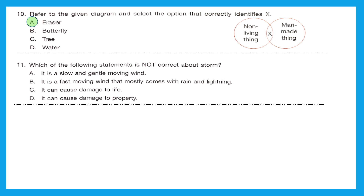Question 11: which of the following statements is not correct about a storm? Option A says it is a slow and gentle moving wind — we already got our answer, because a storm is not slow and gentle. This is an incorrect statement. The other options state it is a fast moving wind that comes with rain and lightning, it can cause damage to life, and it can cause damage to property — all correct. The incorrect statement is option A, which for us is the correct option to select.